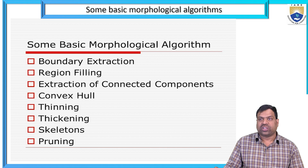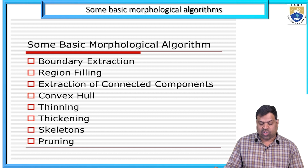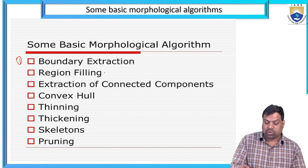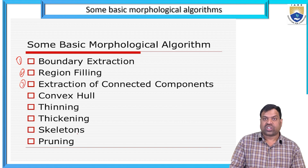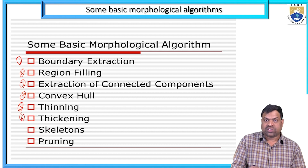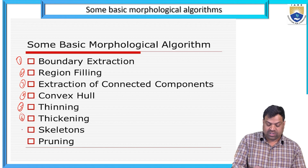The major basic morphological algorithms are: first, boundary extraction; second, region filling; third, extraction of connected components; fourth, convex hull; fifth, thinning; sixth, thickening; seventh, skeleton; eighth, pruning. Each of these will be discussed one by one.